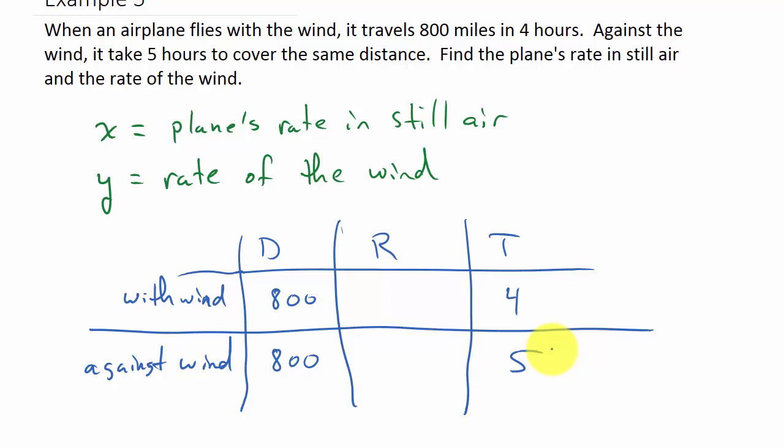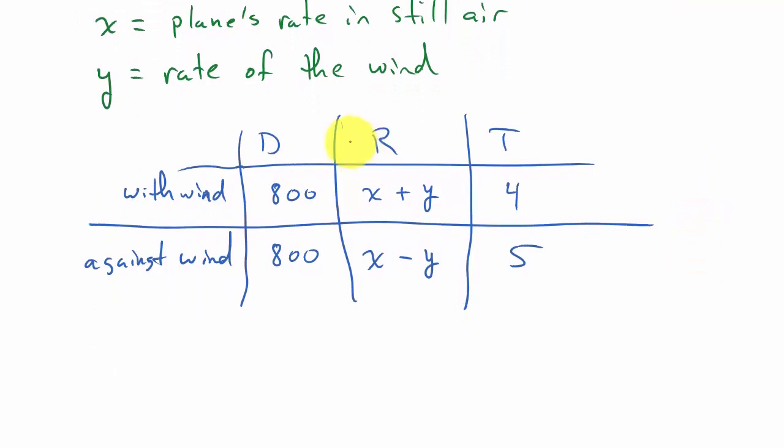Now let's look at the rate. So with the wind, it's the speed of the plane in still air plus the rate of the wind. So the rate here would be x plus y. And then against the wind, that would be the rate of the plane in still air minus the rate of the wind.